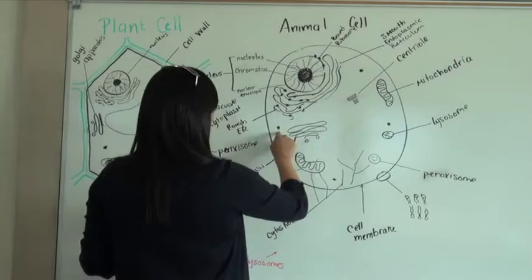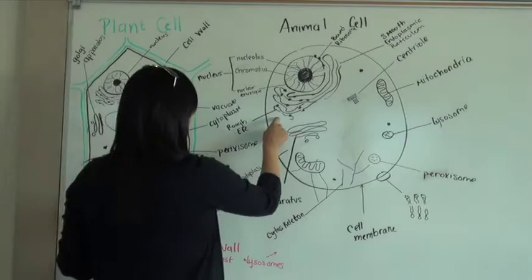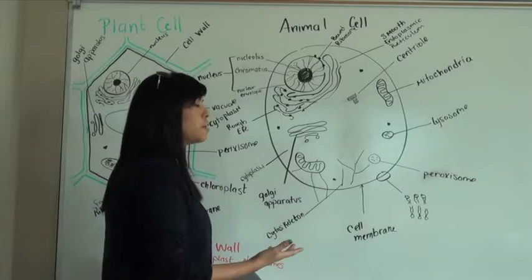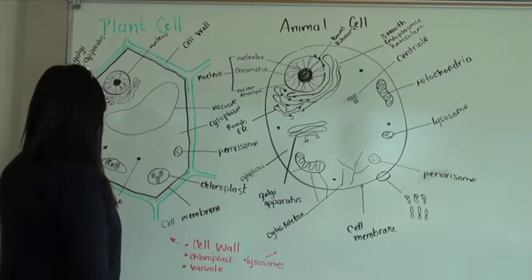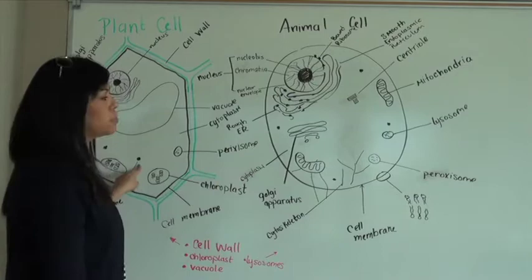We also have these little structures right here, labeled right here as ribosomes. The ribosomes are composed of RNA and proteins and are there for protein synthesis. We have two different types of ribosomes: free ribosomes and bound ribosomes.